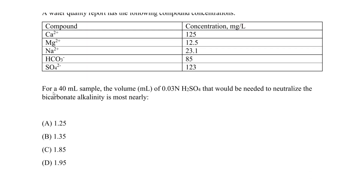For a 40 milliliter sample, we need to find the volume in milliliters of 0.03N sulfuric acid — where N means normality — that would be needed to neutralize the bicarbonate alkalinity. So we have to understand what we're being asked: find the volume of sulfuric acid at this normality needed to neutralize the alkalinity.